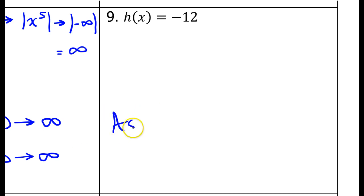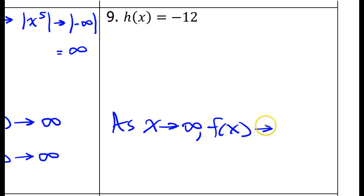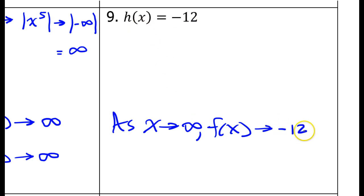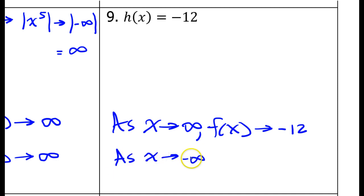Take a look at number 9. As x approaches positive infinity, this is a constant, so it doesn't matter what x is — you're still going to have negative 12. It doesn't matter if x is approaching positive infinity or negative infinity. The value of the function remains constant at negative 12 the entire time.